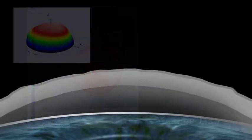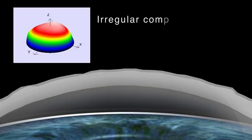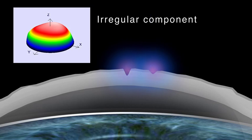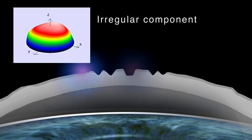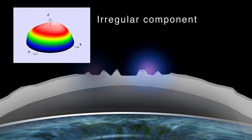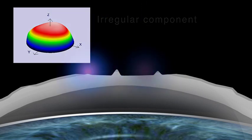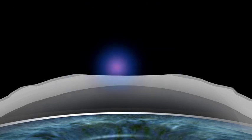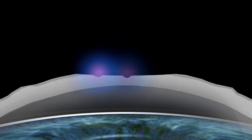TransPRK in combination with corneal wavefront is preferable for patients who need retreatment after radial keratotomy or corneal transplantation. Moreover, it can be used to treat haze, scarred corneal tissue, and keratoconus before corneal collagen cross-linking.